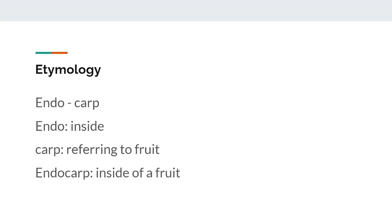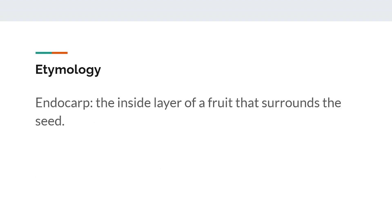One last example is the word endocarp. The prefix 'endo-' means inside, and we know from before that 'carp' refers to fruit, so we can guess that endocarp is the innermost part of the fruit. It turns out that the correct definition is the inside layer of the fruit that surrounds the seeds, which is pretty close to our deduction.